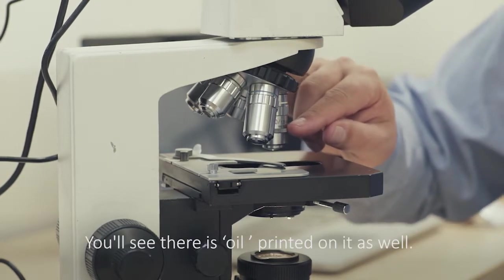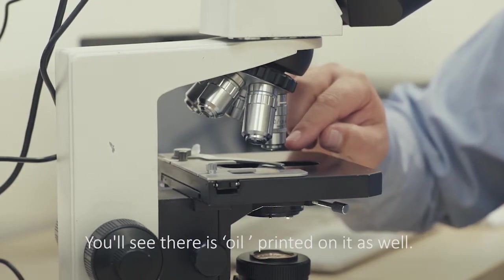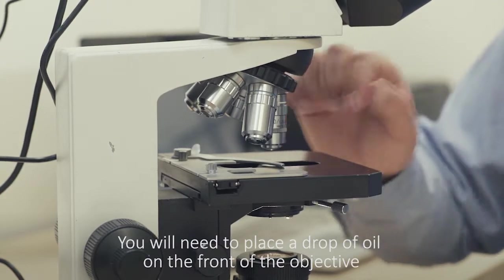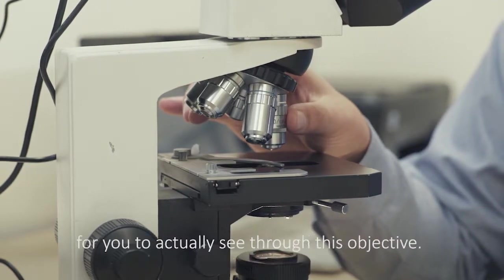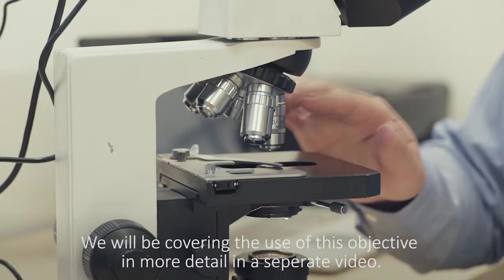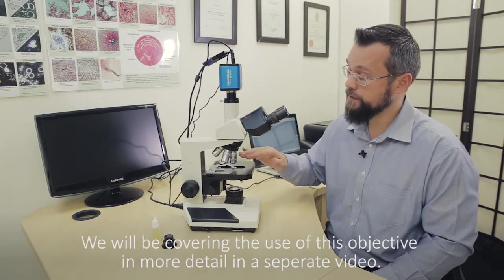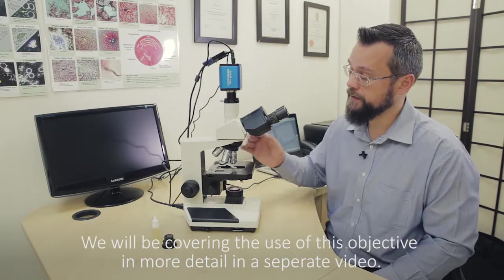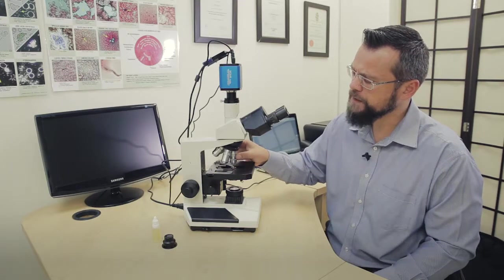The last one, the 100 times objective, the white color coded one, would need a bit of oil. You'll see oil printed on it as well. You will need to place a drop of oil on the front of the condenser for you to actually see through this objective. We will be covering the use of this objective in more detail in a separate video.